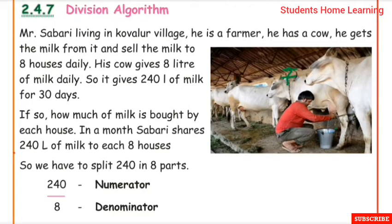He has a cow and he gets milk from it and sells the milk to 8 houses daily. His cow gives 8 litres of milk daily, so it gives 240 litres of milk for 30 days. If so, how much milk is bought by each house? In a month, Sabari shares 240 litres of milk to each of the 8 houses.